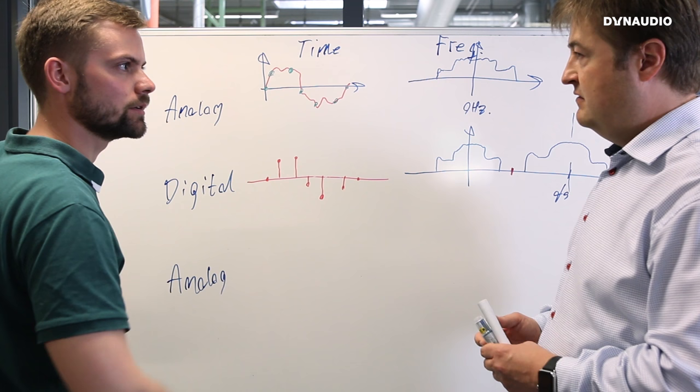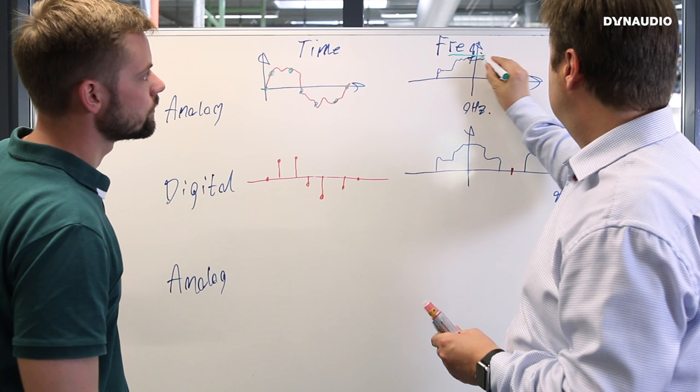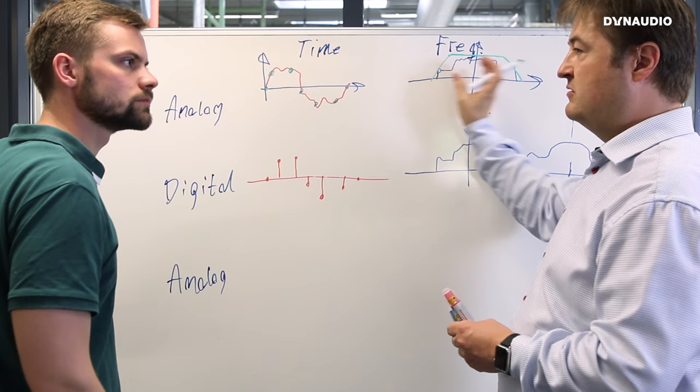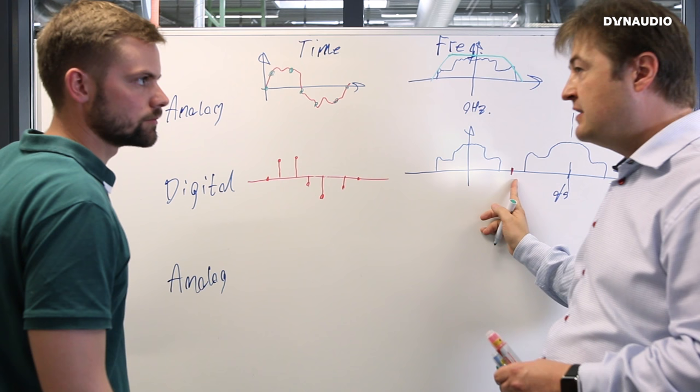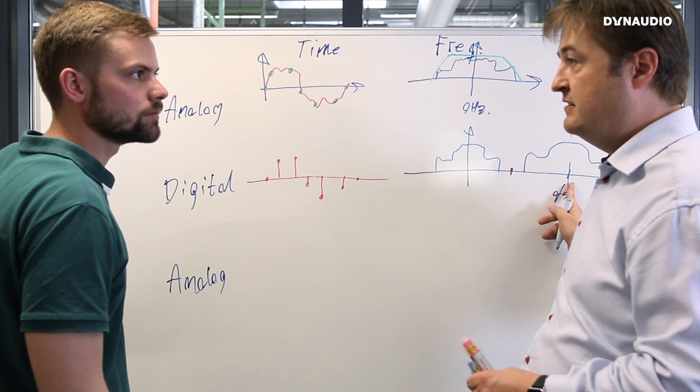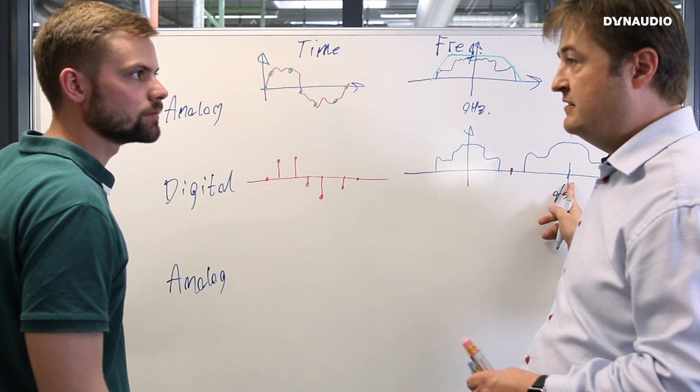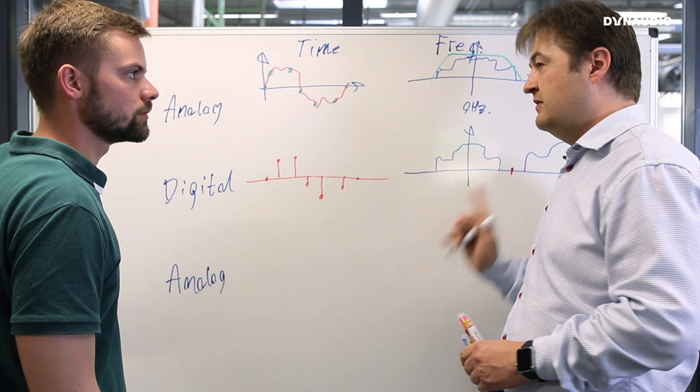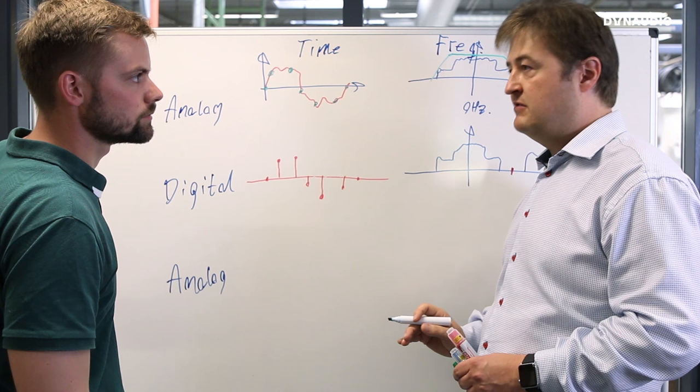Well, let me go on because what usually happens is that we then apply a low pass filter to make sure that there's no frequency content above the Nyquist frequency. This frequency is actually called the Nyquist frequency, whereas the sampling rate is also called the Nyquist rate.